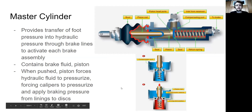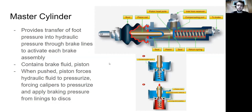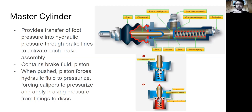The master cylinder provides the transfer of your foot pressure — when you push down on the rudder pedal or pull the lever — into hydraulic pressure that gets forced through the brake lines to activate each brake assembly. It contains brake fluid and a piston. When you push the brake pedal or activate the lever, the piston forces the hydraulic fluid inside the master cylinder to pressurize.